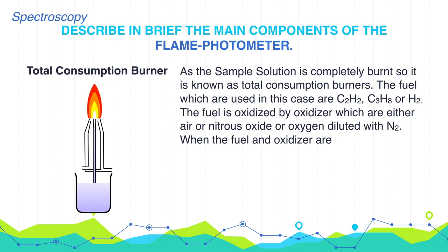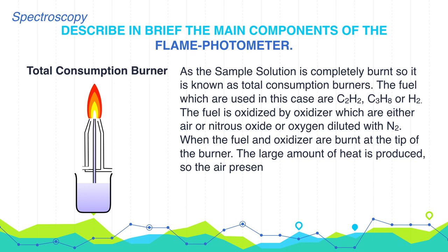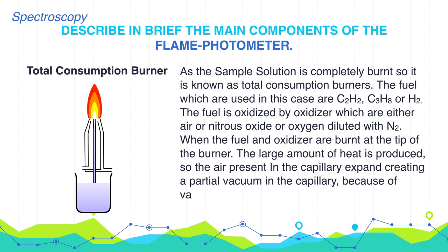When the fuel and oxidizer are burnt at the tip of the burner, a large amount of heat is produced. The air present in the capillary expands creating a partial vacuum in the capillary. Because of vacuum, the sample solution rushes to the tip of the burner.